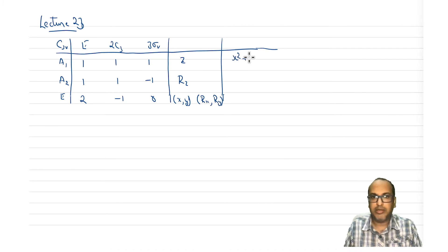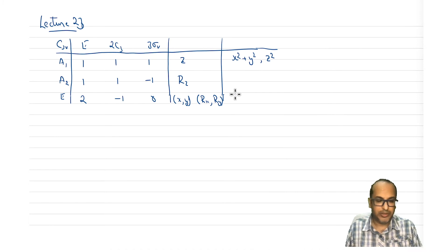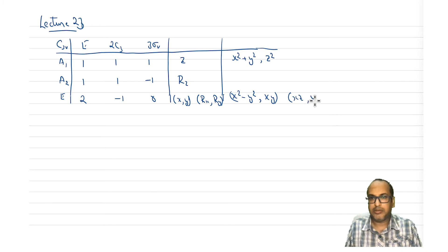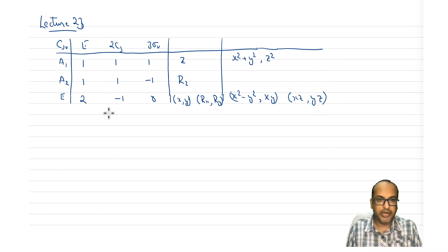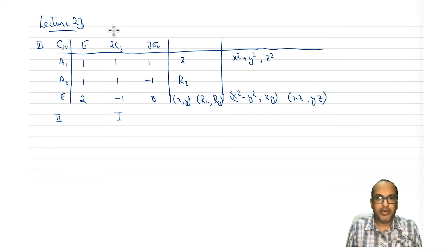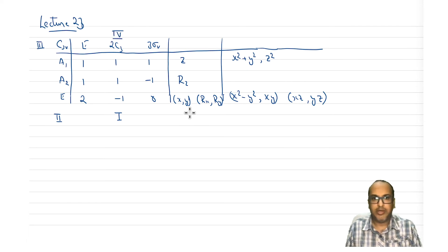And here you will see something written again as X, Y — some functions of X and Y — for example, X squared minus Y squared. So let us divide the character table into different areas: area 1, area 2, area 3, area 4, area 5, and area 6. This division appears in most character tables.